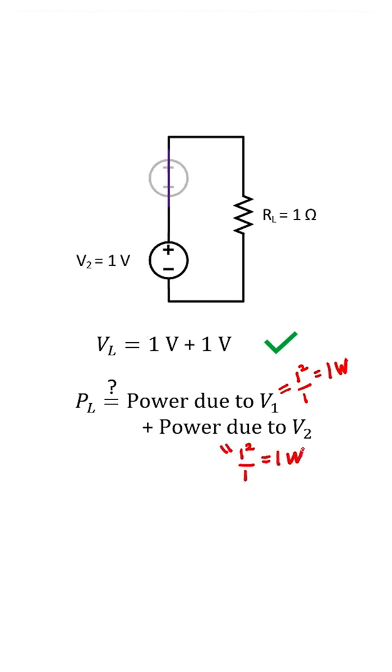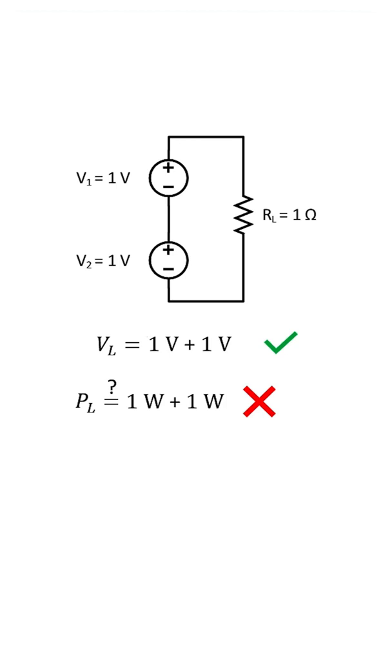Likewise for source 2. 1 plus 1 is 2 watts, but the actual power consumed is 4 watts, not 2.